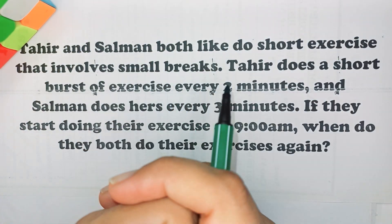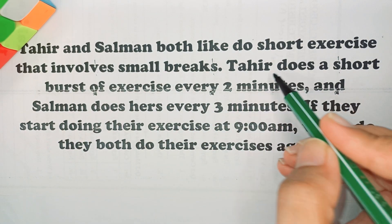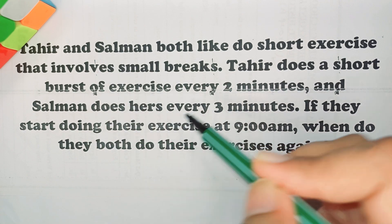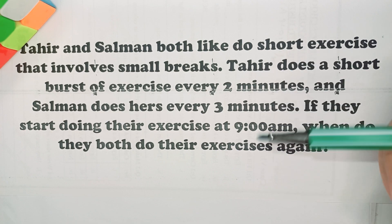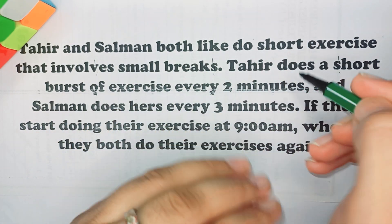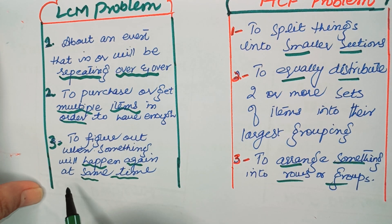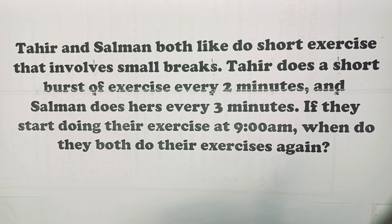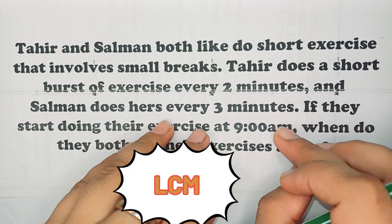Word problem: If they start doing their exercise at 9 AM, when do they both do their exercise again? Now you can see the phrase 'every two minutes.' Referring back to our keywords, we look for when something will happen again at the same time. Here we are finding when they do their exercise again — this event will happen again at the same time. So this is an LCM problem.